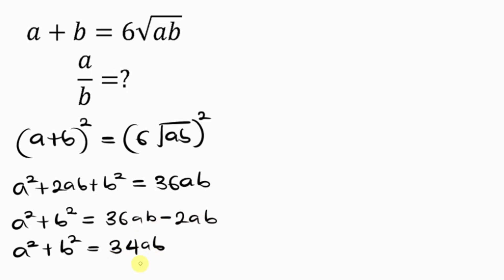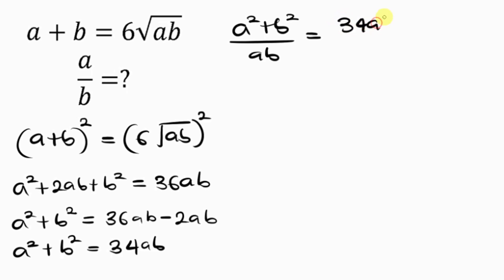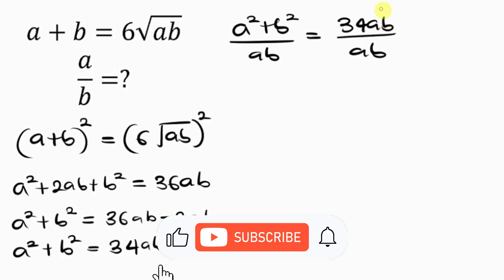Our next step is to divide both sides by ab. So I have a squared plus b squared divided by ab, equal to 34ab divided by ab. The reason I'm doing this is to isolate 34 on the right-hand side. Notice that ab cancels off on the right, leaving just 34.